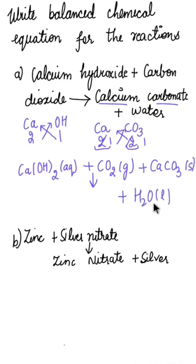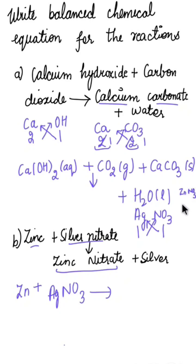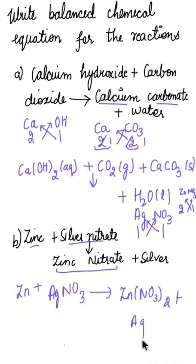Next is zinc plus silver nitrate. Zinc is Zn and silver's symbol is Ag. Nitrate is NO₃, and since the valency of Ag is 1 and NO₃ is 1, they give AgNO₃. The product zinc nitrate: valency of zinc is 2 and nitrate is 1, giving Zn(NO₃)₂. The other product is silver, Ag.